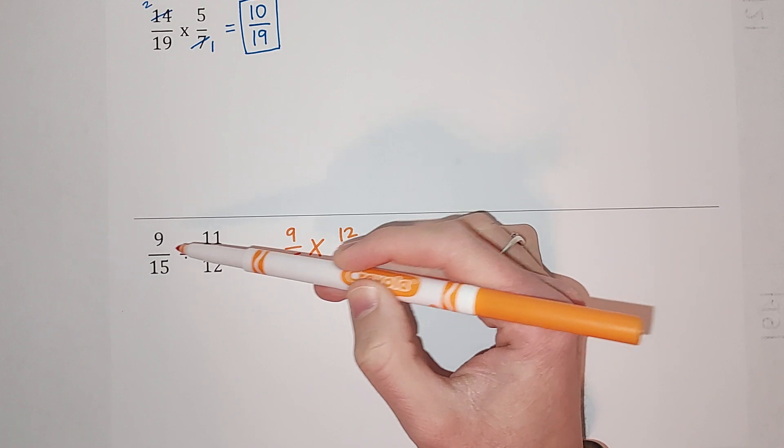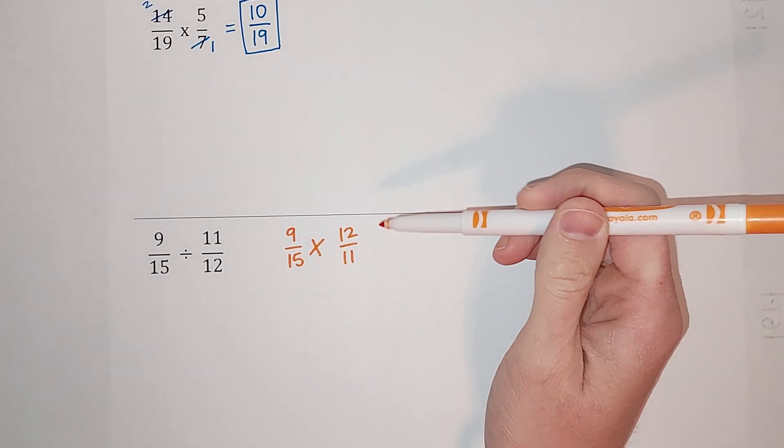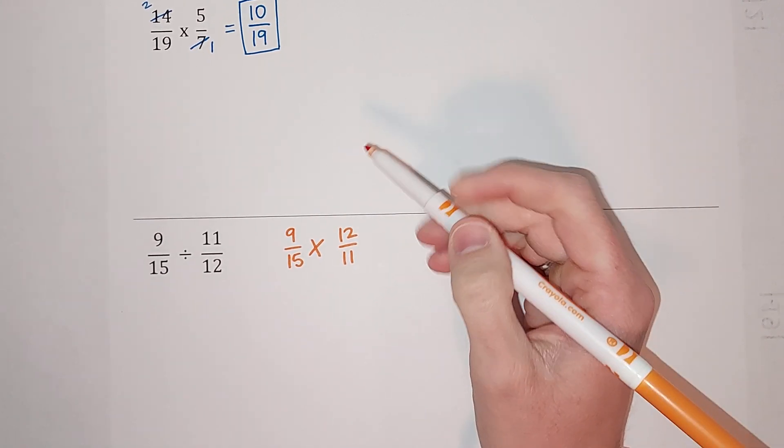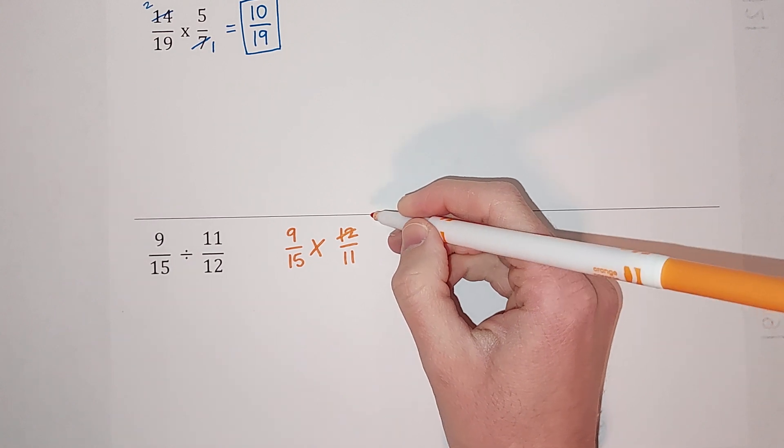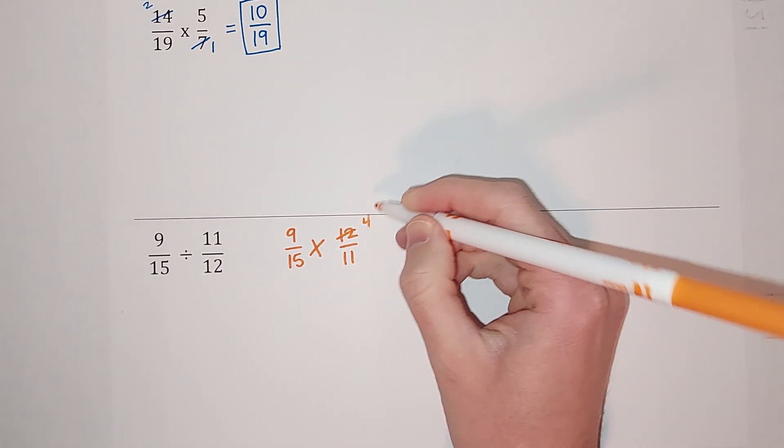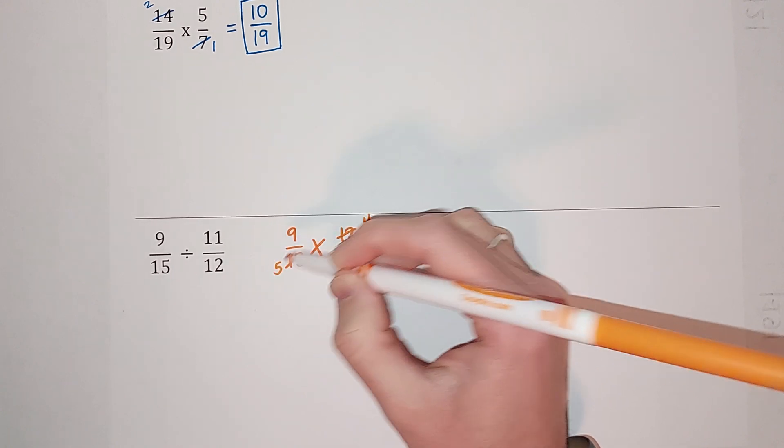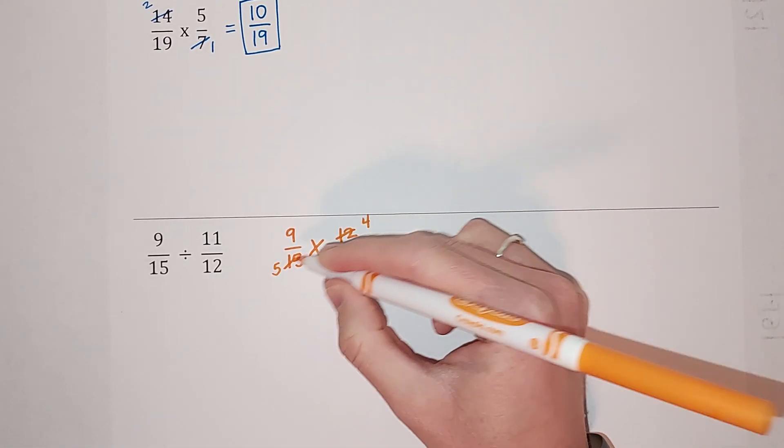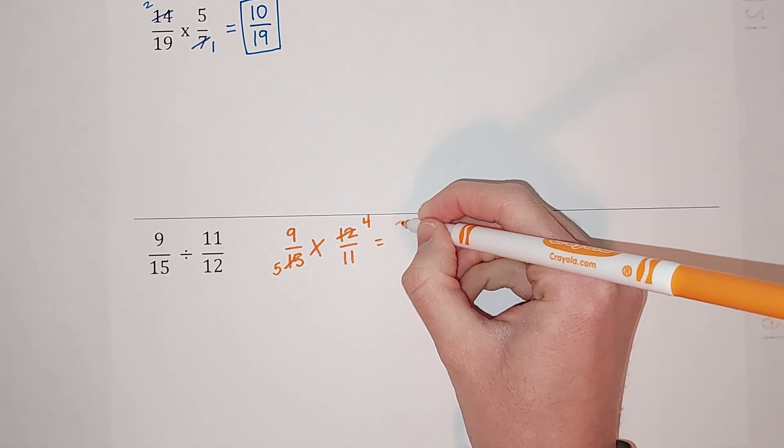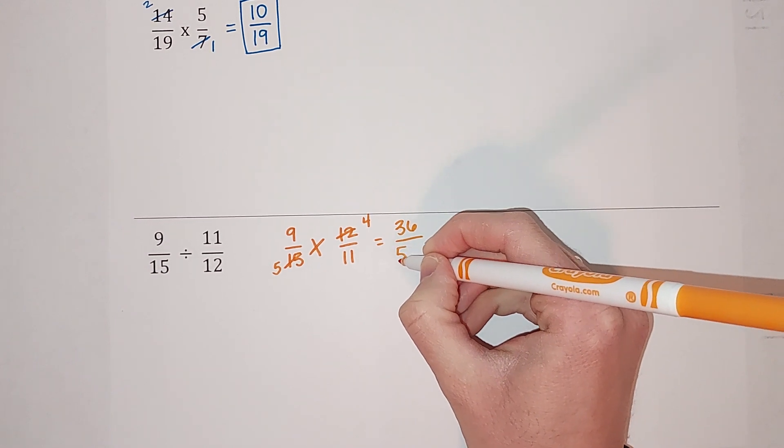You might have thought, oh, 3 goes into 9 and 12, not here. Look, once you're multiplying, okay. So I do notice 3 goes into both 12 and 15, so it goes into 12 four times and 3 goes into 15 five times. 9 times 4, we're just multiplying straight across, 9 times 4 gives me 36, 5 times 11 gives me 55. Double check, make sure it's simplified all the way. This is, and that's my answer.